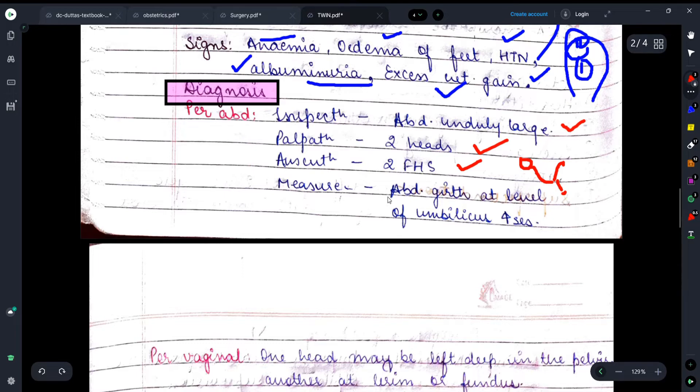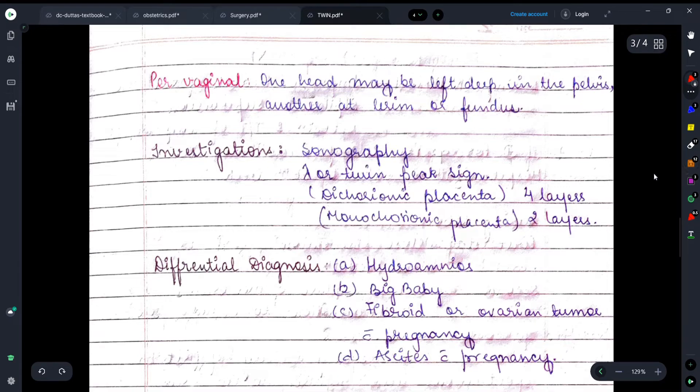Moving on, measurement - the abdominal girth at the level of umbilicus increases. Because obviously, just to accommodate the two fetuses, the abdomen's girth, its width, will increase. Now let's talk about the per vaginal examination. It's mentioned here that sometimes one head is left deep in the pelvis and another at the brim or fundus. Obviously, the uterus can accommodate only one head at a time. So the other head will either be near the pelvic brim, or in the fundus region of the uterus body, where we can see it.